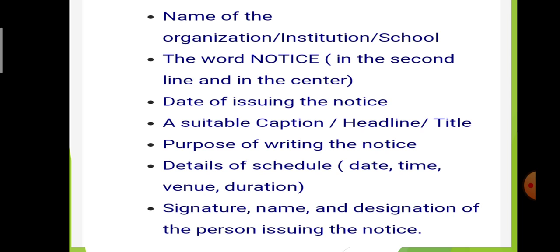In the content of the notice, you will write the purpose of writing the notice, giving the details of the schedule if you are writing it to inform people about any event, program, or competition. Here you will inform them about the date, at what time it is going to take place, what is the venue, and what is the duration of that program. At last, you will write the signature and name of the writer of this notice, and below that the designation of the person issuing the notice.